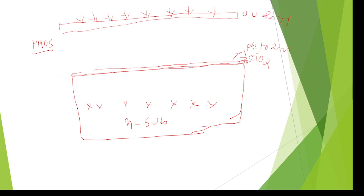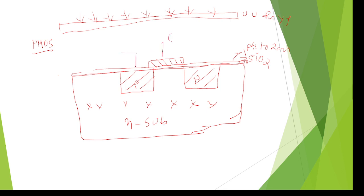Next, remove the photo resist and silicon dioxide layer, then deposit polysilicon material to design the gate terminal. Diffuse holes into the N-substrate to design the source and drain terminals. Then cover the total surface again with a silicon dioxide layer for protection, and finally cover with metal — this process is called metallization.